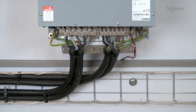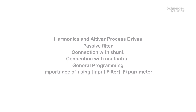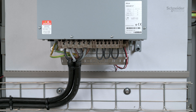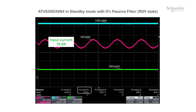Be aware that out of the box, the passive filter is configured with a shunt, which always uses the internal capacitors of the filter. Here is the wiring diagram with shunt. Now, with the passive filter in default setup connected to the drive in ready state, due to the capacitors we can observe a presence of reactive current at the input in standby mode — 25% of nominal current.